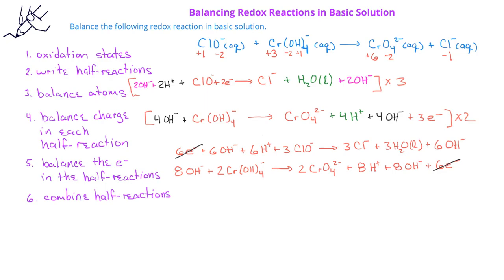Now we add the two half reactions together. First, we cancel the six electrons on the reactant side of the reduction half reaction and the product side of the oxidation half reaction. We combine hydroxides and hydrogen ions on the same side: in the reduction half reaction, six hydroxides and six hydrogen ions on the reactant side become six waters; in the oxidation half reaction, eight hydrogen ions and eight hydroxides on the product side become eight water molecules. The six water molecules on the reduction reactant side cancel six of the eight water molecules on the oxidation product side, leaving two waters. Six hydroxide ions on the product side of the reduction half reaction cancel six of the eight hydroxide ions on the reactant side of the oxidation half reaction, leaving two extra hydroxide ions.